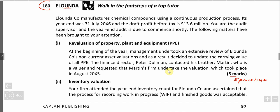Elunda company manufactures chemical compounds using a continuous production process. Its year end was 31st July 20x6 and the draft profit before tax is 13.6 million. You are the audit supervisor and the year-end audit is due to commence shortly. The following matters have been brought to your attention.